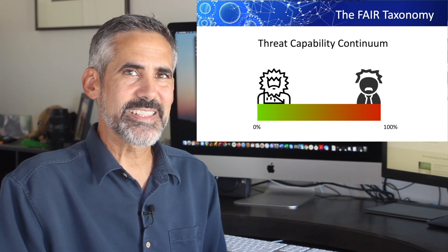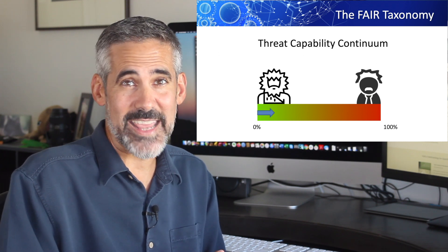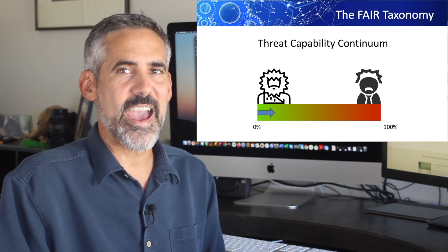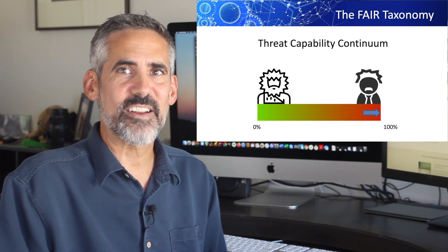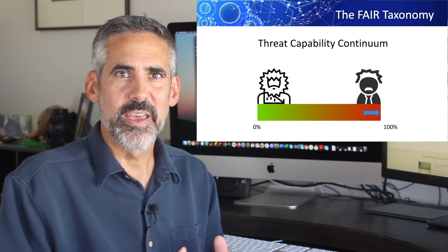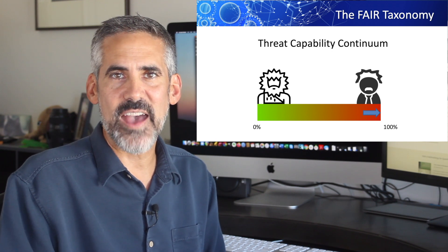It's a spectrum of attacker capabilities from the worst, technically inept, to the greatest hackers in the world. In the case of natural disasters, think of the CAT rating for storms as they go from tropical storms all the way up to CAT 5 hurricanes.